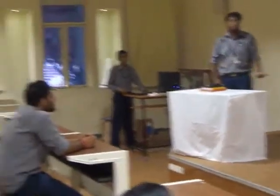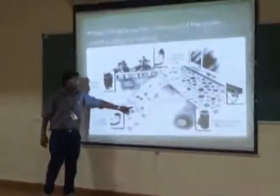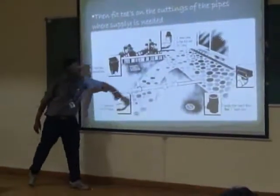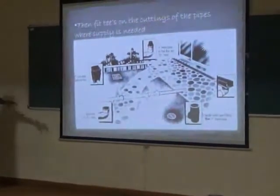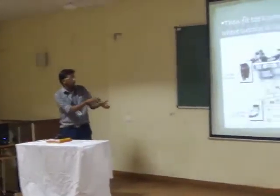What is the procedure to implement drip irrigation? First, you have to dig a hole in the ground area where you want to implement this. Then you have to fit these T-fittings on the cuttings, on the edges of the pipes, where you want water to be supplied. As shown in this figure, these are all T-sections, where from the same main line, you can have water supplied through the section slides.